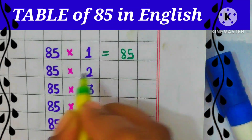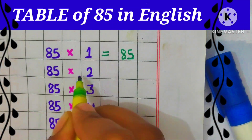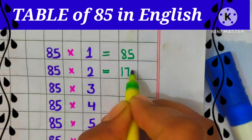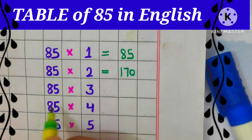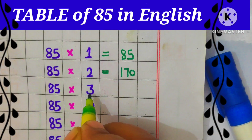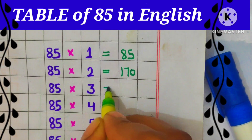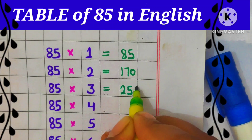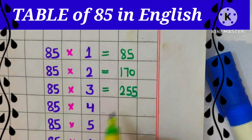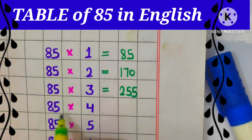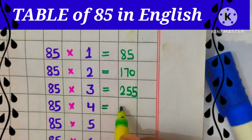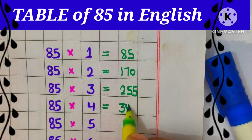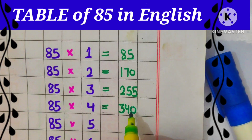85 2s are 170, 85 3s are 255, 85 4s are 340,